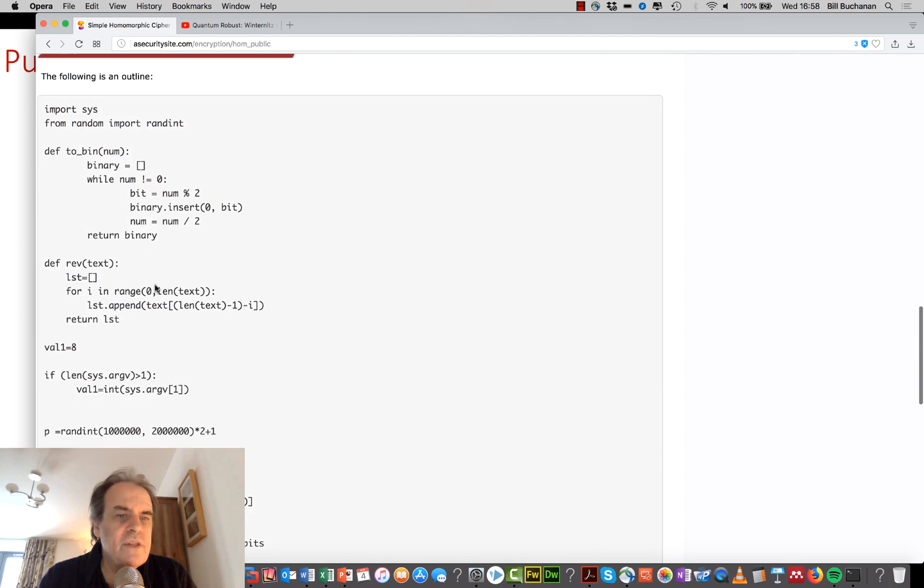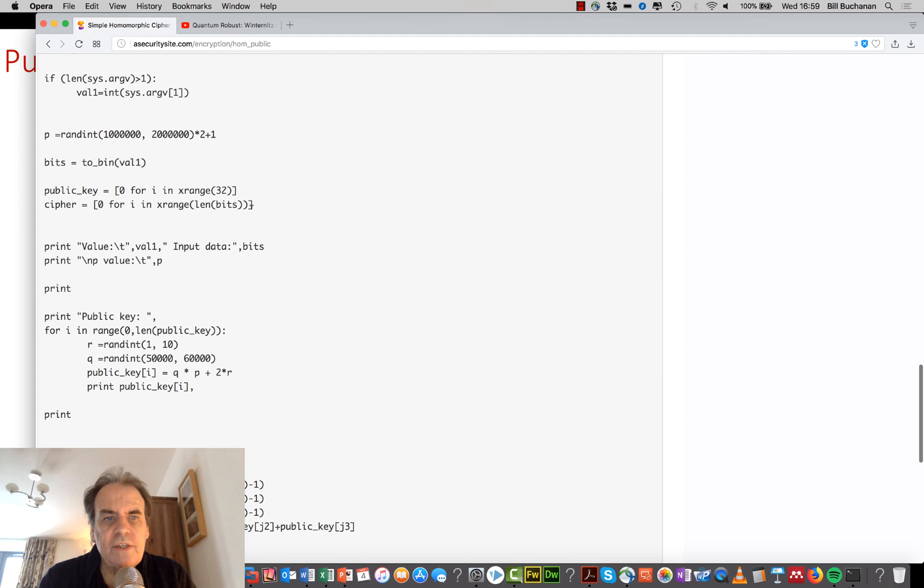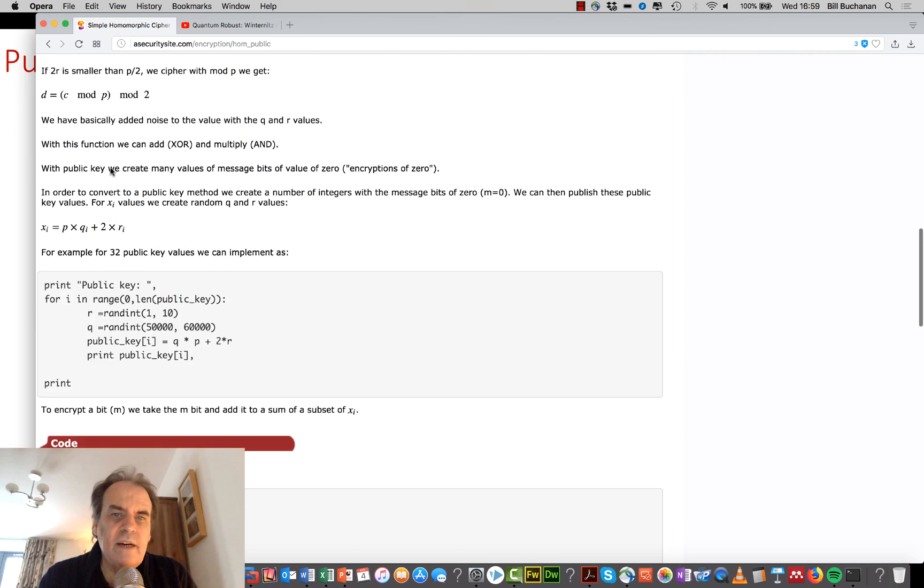So this is the code here. This is us, so we're generating our private key here. Quite small key. Obviously, in real life, it'd be much larger. We take our value in, and then we're going to take our bits, convert it to a bit array.